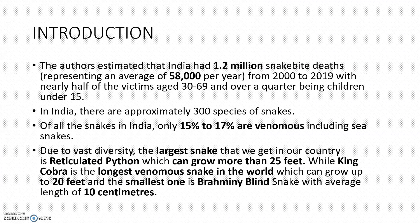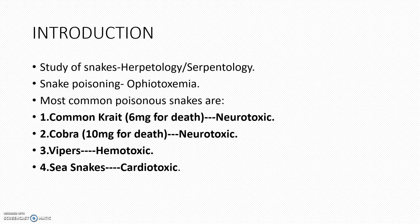In India there are approximately 300 species of snakes, and 15 to 17 percent of those are venomous. The reticulated python can grow up to 25 feet. The King Cobra is the longest venomous snake in the world, growing up to 20 feet, and the smallest is the Brahminy blind snake at an average of 10 centimeters. The study of snakes is known as herpetology or serpentology, and snake poisoning is known as ophiotoxicology.